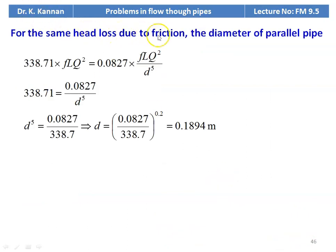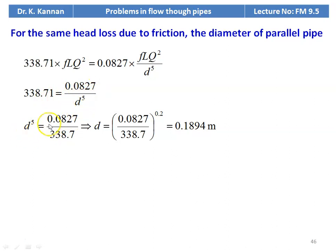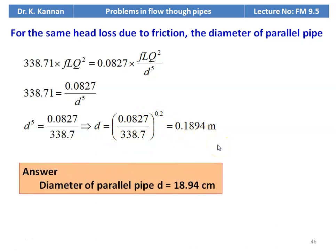For the same head loss due to friction, equating the two expressions: 338.7 into FL Q square equal to 0.0827 into FL Q square by D to the power 5. So D to the power 5 equal to 0.0827 divided by 338.7. Diameter equal to 0.0827 divided by 338.7, to the power 0.2, which is 0.1894 meter. The answer: diameter of the parallel pipe small d equal to 18.94 centimeter.